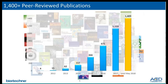Today, we currently have over 1,400-plus peer-reviewed publications using the RNAscope and BaseScope technologies. This shows the increase in market adoption of the RNAscope and BaseScope assays utilized in many different research and application areas.